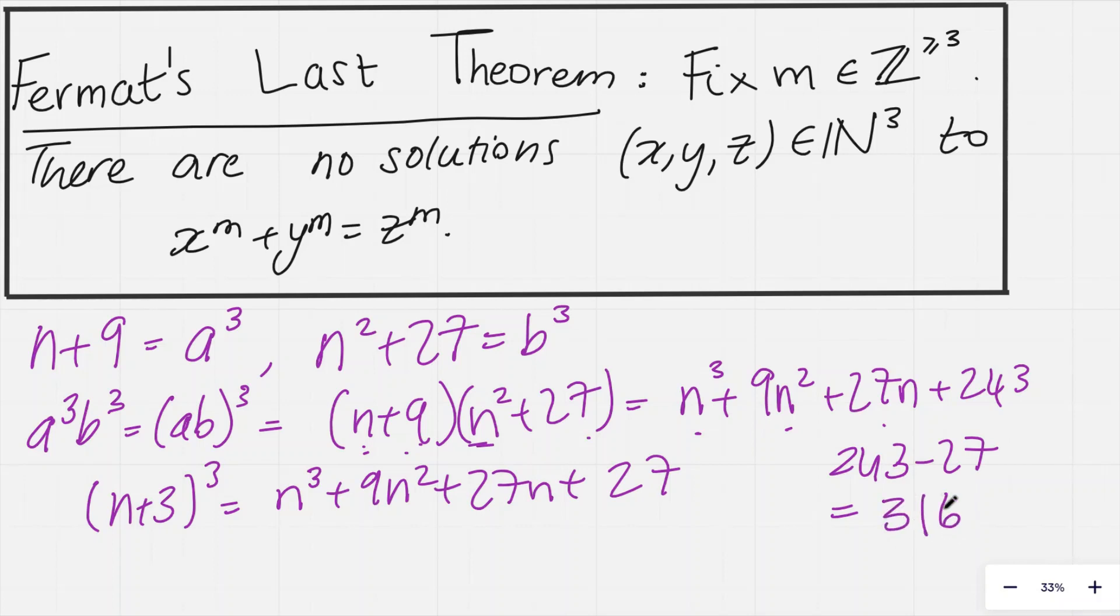But this is not an issue, because then I can write that a cubed times b cubed, in other words, a b cubed, is just n plus 3 cubed plus 216. And 216 is precisely 6 cubed. So, we have a b cubed equals n plus 3 cubed plus 6 cubed.